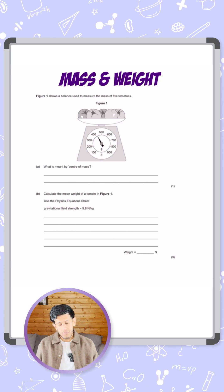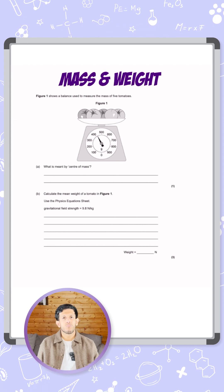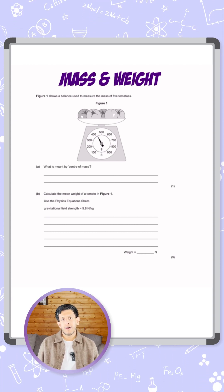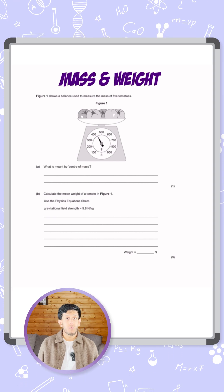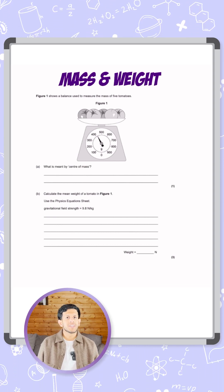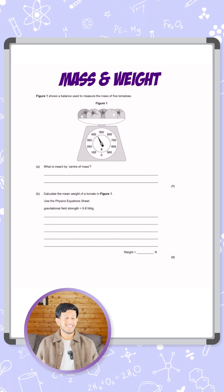What is meant by the center of mass? This is a definition we need to know. You can mention this in one of two ways - either the weight of the object or the mass of the object. We can say it's the point at which the weight of the object is considered to act, or the point at which the mass appears to be concentrated.